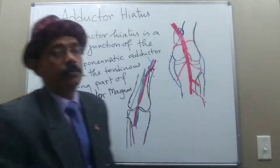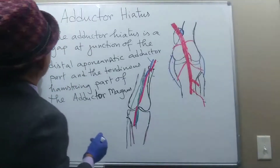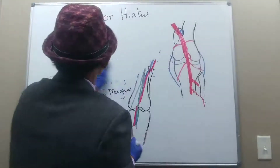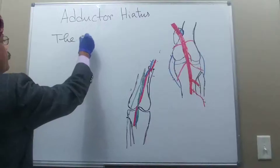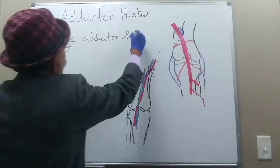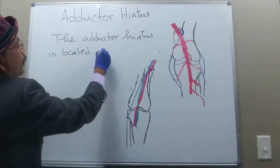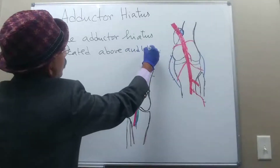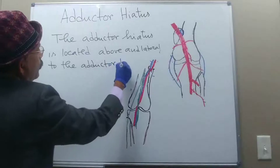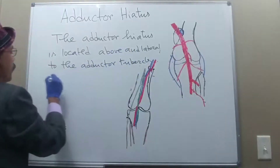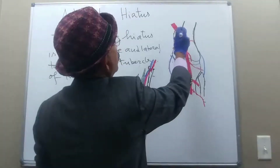The adductor magnus inserts to the femur, and the adductor hiatus is located just above and lateral to the adductor tubercle of the femur.